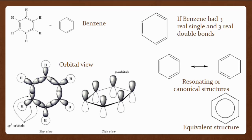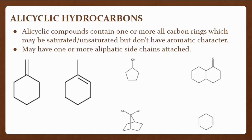Because of the stability imparted by the delocalized pi electrons in the ring, aromatic molecules do not undergo many of the reactions which are typical for alkenes, but there are a number of interesting and useful substitution reactions that they undergo in which the hydrogen atoms on the ring are replaced by other functional groups. Alicyclic compounds contain one or more all-carbon rings which may be saturated or unsaturated but do not have aromatic character. These also may have one or more aliphatic side chains attached.